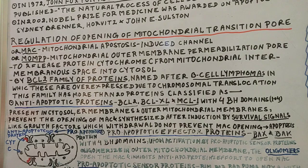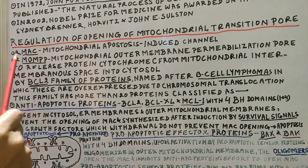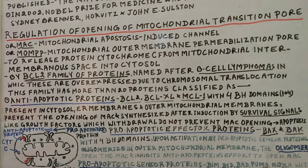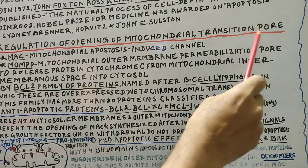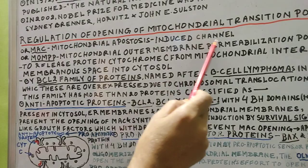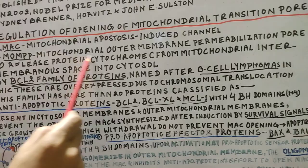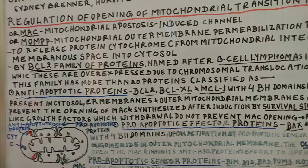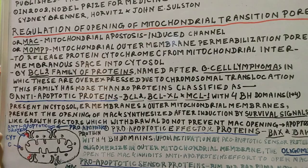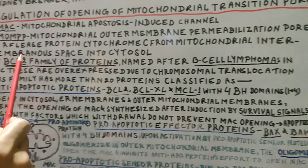We shall now go to the regulation of the opening of the mitochondrial transition pore, about which you have learned in the apoptosis chapter. This mitochondrial transition pore is also known as MAC — mitochondrial apoptosis-induced channel — and also as MOMP — mitochondrial outer membrane permeabilization. These are three names for the same channel, which is meant to release cytochrome C from the mitochondrial intermembranous space into the cytosol.